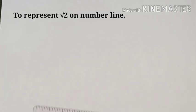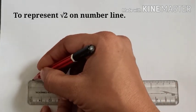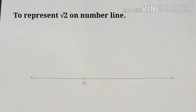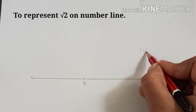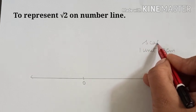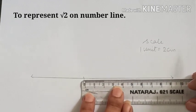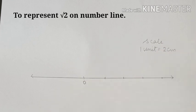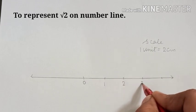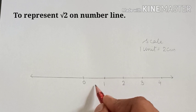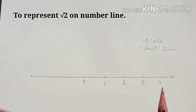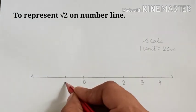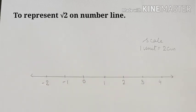Now to represent root 2 on number line, first draw a line — which will be our number line — and mark 0. I am taking a scale of 1 unit here. So this is minus 1, minus 2 — this is our number line. I have taken 2 centimeters as 1 unit scale here so that it is a bit bigger and easier to see.